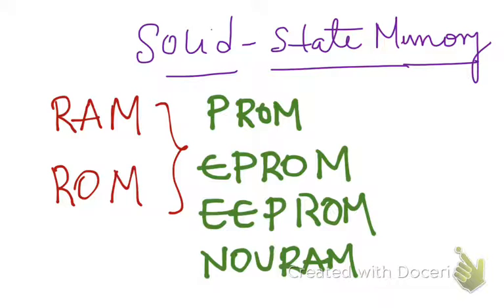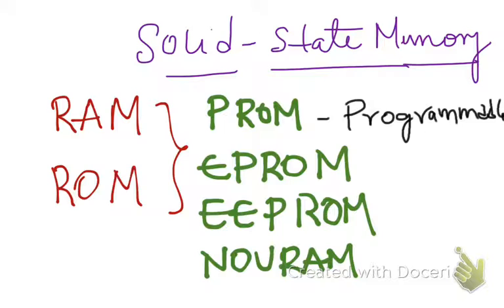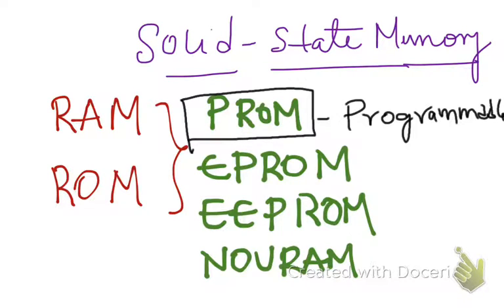The first one is PROM — it stands for Programmable ROM. As the name indicates, it is programmable, which means you can write whatever content or whatever program you want and put it in it. The ROM is shipped in an empty or a semi-programmed state, so the user can write his own program into the PROM. But once you have written your program in this PROM, it cannot be erased, which means you can program it only once.